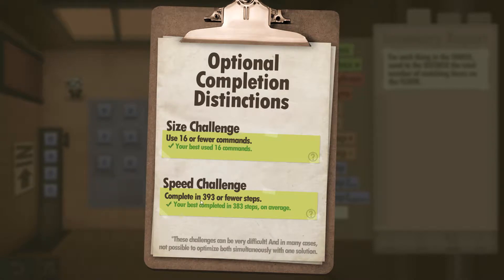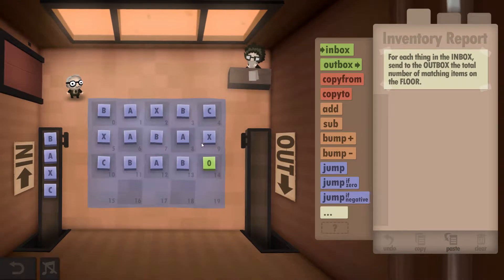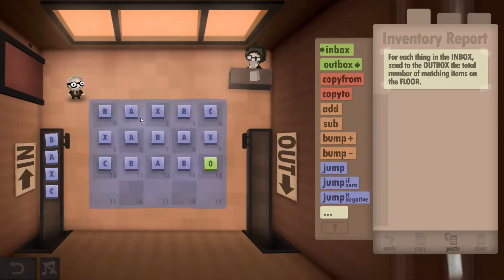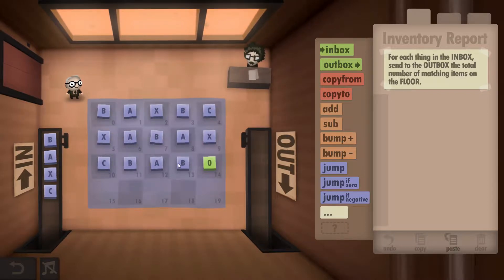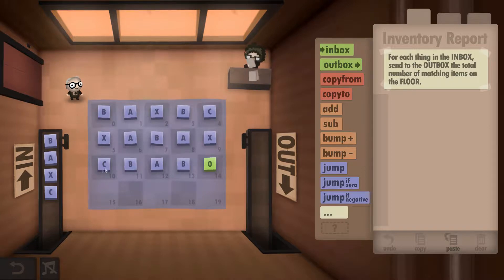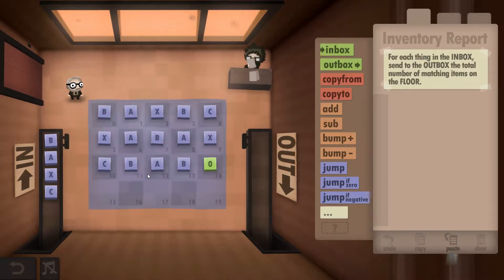What's required in this one is we're going to grab a letter from the inbox, in this case B, count how many there are - one, two, three, four, five - and then we're going to output the number 5 and do this for every letter. So we're just going to set ourselves up a little bit to make things easier.